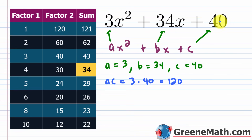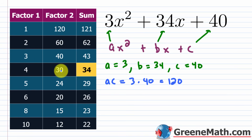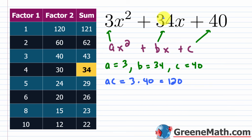Because all the signs are positive, consider the positive factor pairs of 120: 1 and 120, 2 and 60, 3 and 40, and then 4 and 30 — since 4 + 30 = 34, that's what we want. So we'll use 4 and 30 to rewrite the middle term.